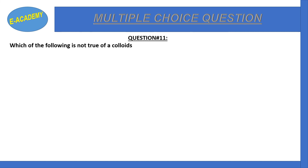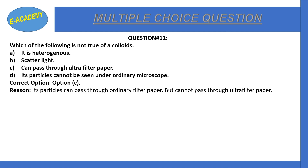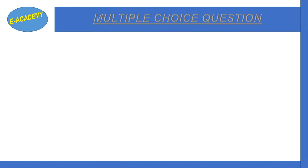Question number 11: Which of the following is not true of colloids? a) it is heterogeneous, b) it scatters light, c) it can pass through ultrafilter paper, d) its particles cannot be seen under ordinary microscope. Correct option is c. Colloid particles can pass through ordinary filter paper but cannot pass through ultrafilter paper.